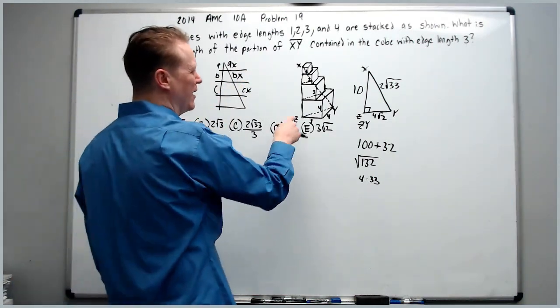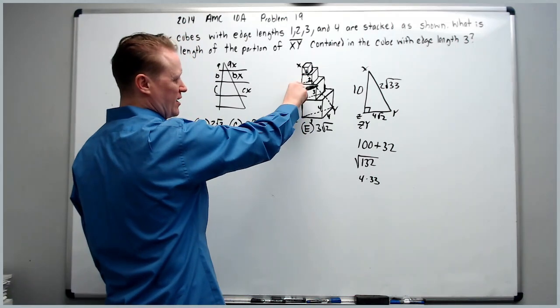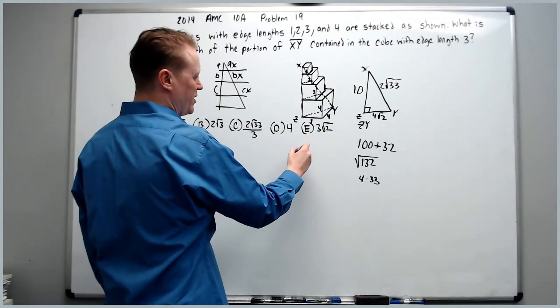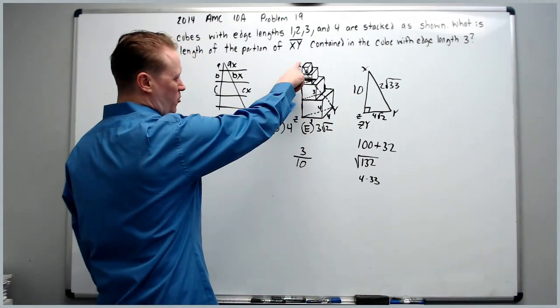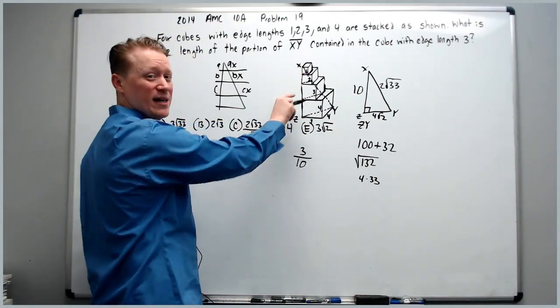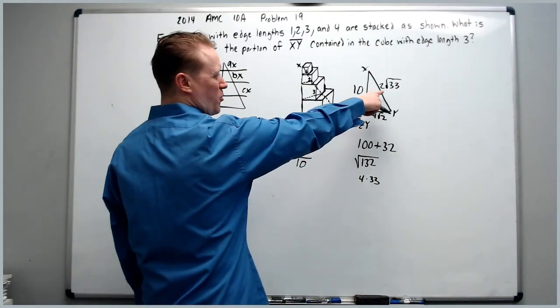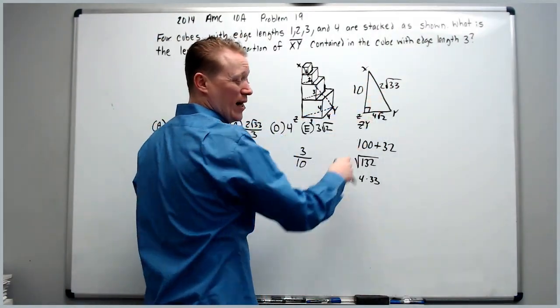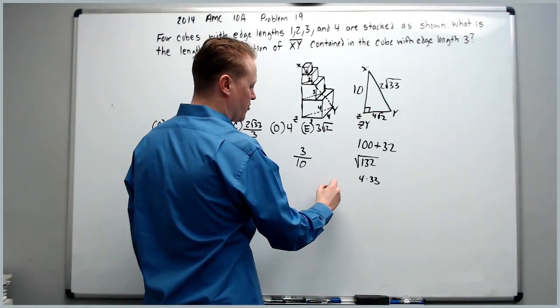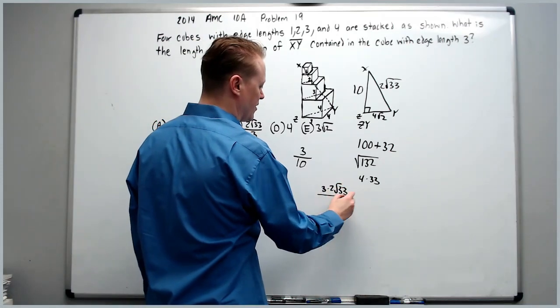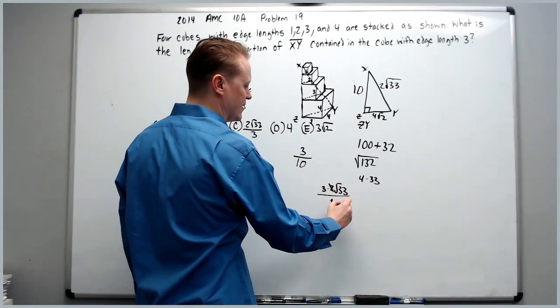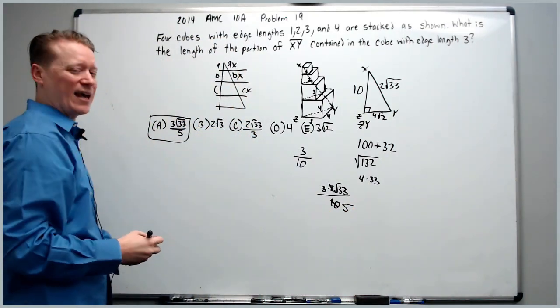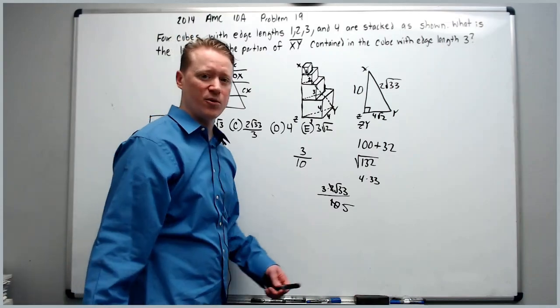Because of that we can just find the proportion of the cube that's made up on XY which is going to be 3 tenths. 3 tenths of XY is right here and therefore 3 tenths of XY will be the answer. So 3 times 2 root 33 over 10, 2 goes into 10 five times and you're going to get answer choice A, 3 root 33 over 5.